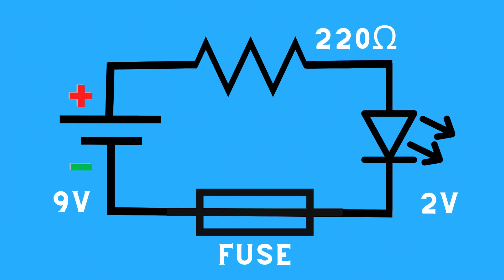If you don't have a multimeter, you can test a fuse by attaching it in series to a circuit. You need a power source, a diode, and a resistor to set this up.